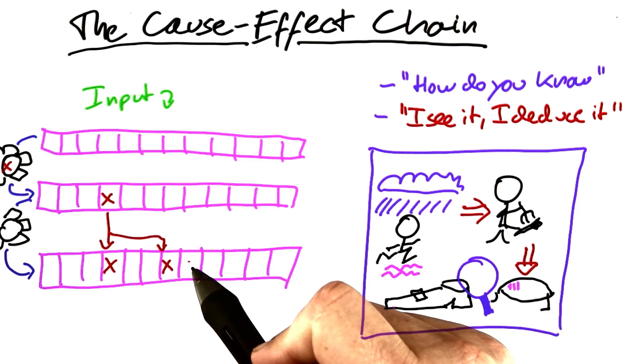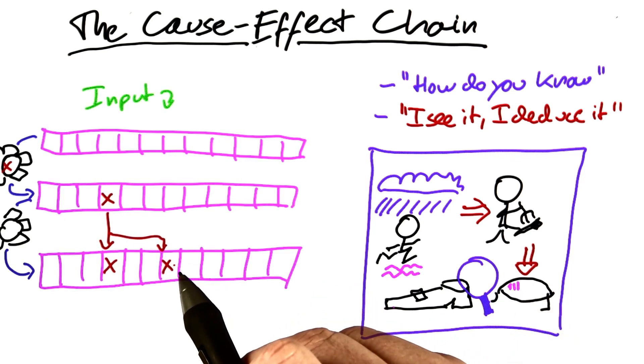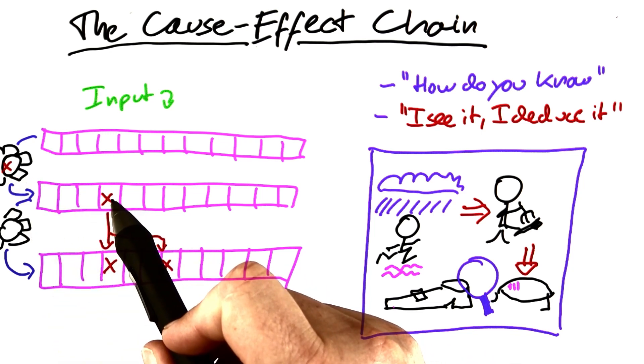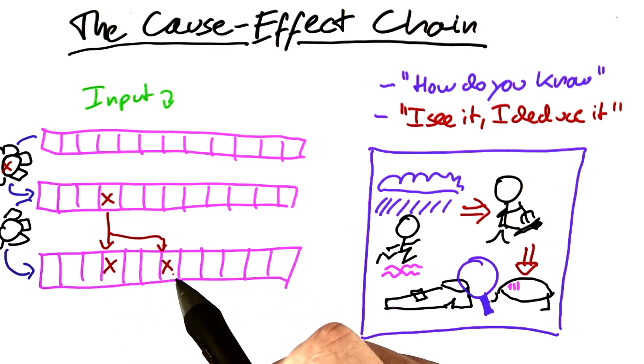In debugging, we also have such a cause-effect chain, from the defect to the infection, that is an error in the state, and finally to the failure, which can be observed by a user.